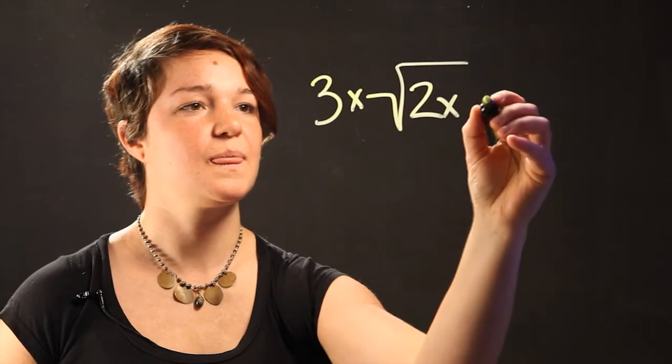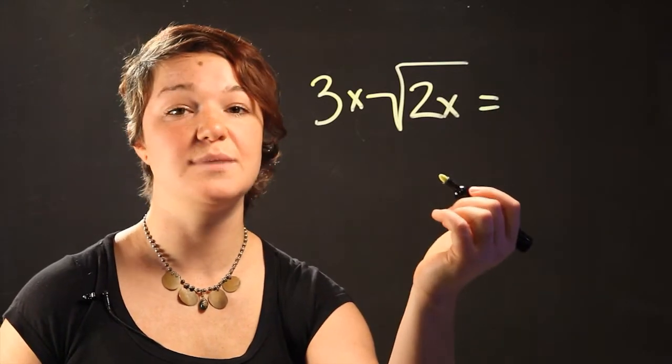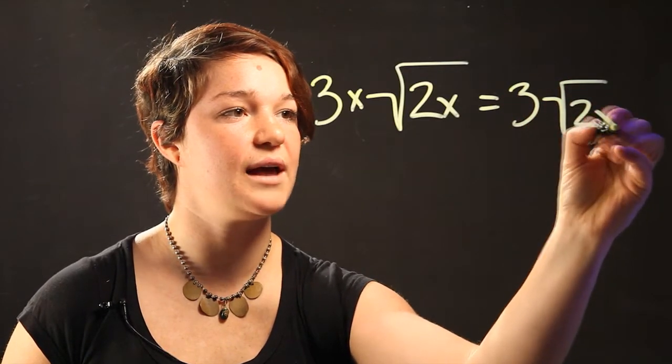So in this case, all you have to do is multiply the two numbers together and what it comes out to is 3 radical 2x.